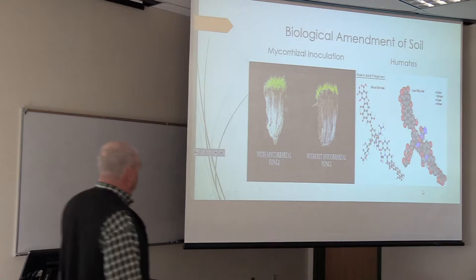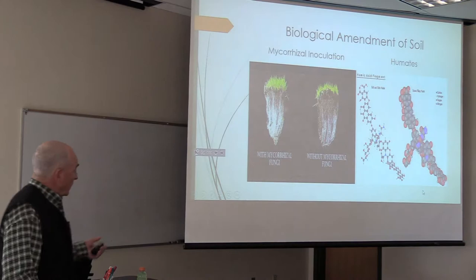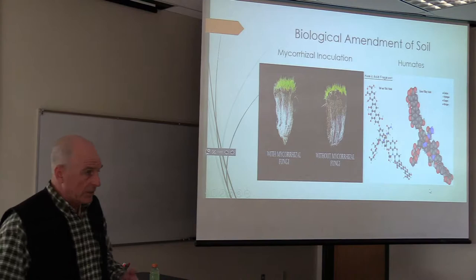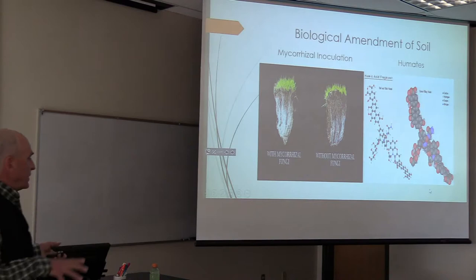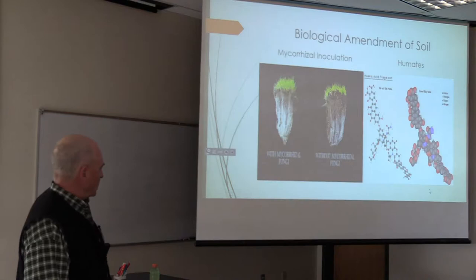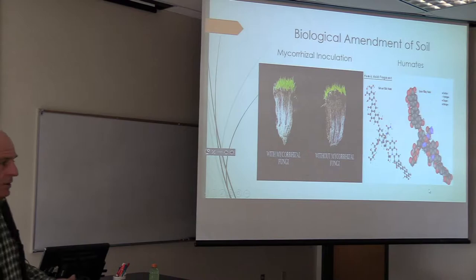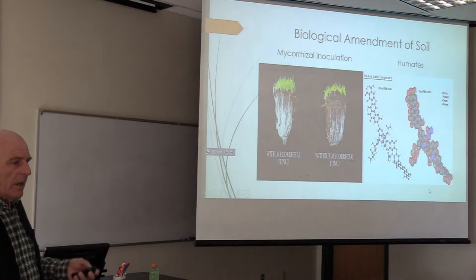Many of you may be familiar with mycorrhizal inoculation. In general, it enhances the root structure of the plants you aim to reestablish by extending the filaments attached to the original plant biomass and increases water and nutrient absorption. Humates and humic and fulvic acids are byproducts of decomposition of organic matter and are basically the building blocks of soils, enhancing the development and maturation of soil.